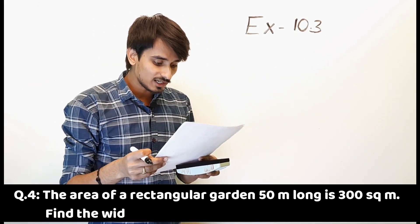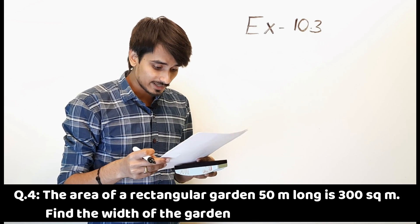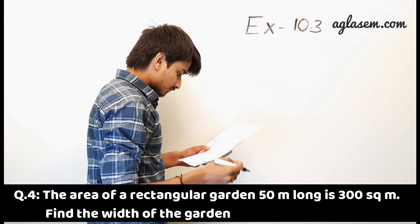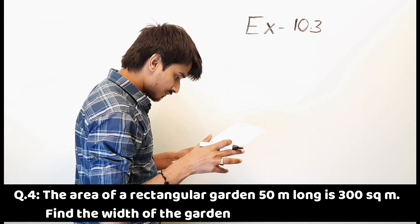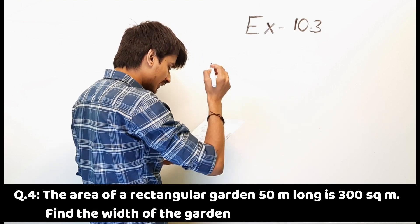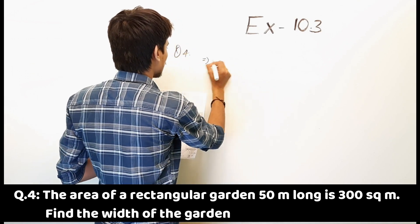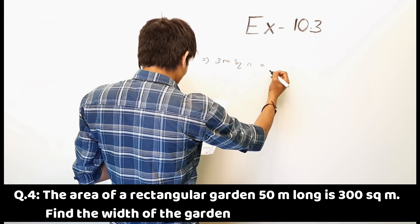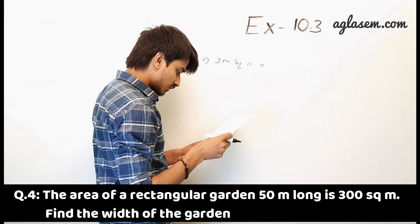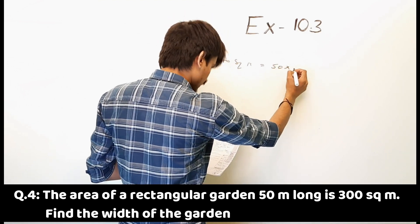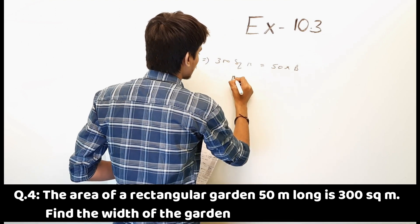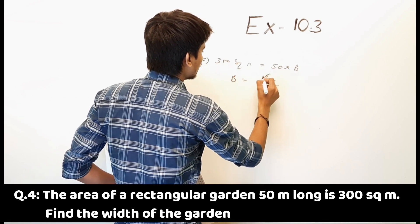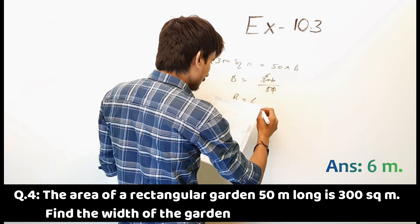Question 4: the area of a rectangular garden 50 meter long is 300 square meter. Find the width of the garden. Area of rectangle is equal to 300 square meter. Length is 50 meter. So breadth is equal to 300 divided by 50, which equals 6 meter. So this is the answer.